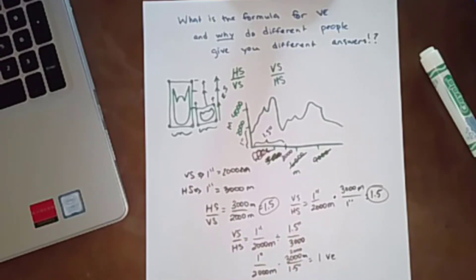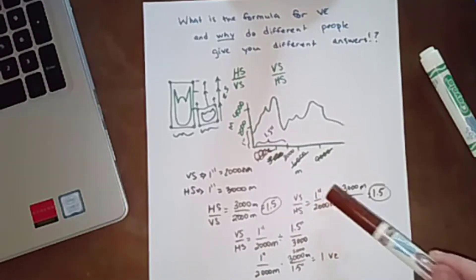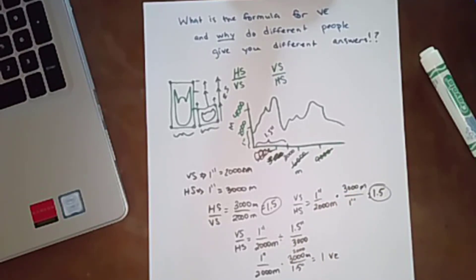If you're given vertical scale divided by horizontal scale, then it really doesn't matter, just make sure that you're using the full scale, the map distance and the real world equivalent for both. All right, thanks, bye.